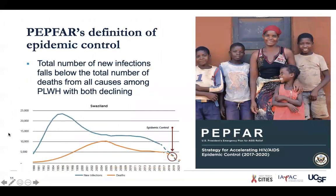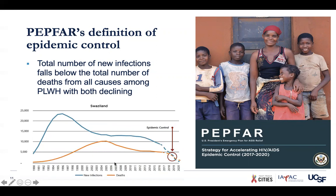PEPFAR has its own definition of epidemic control: it's when the total number of new infections falls below the total number of deaths from all causes among people living with HIV, with both declining. So if new infections are going up and deaths are going up, that's not epidemic control even though the lines may cross. Both need to be declining, and you want fewer new infections than deaths from all causes among people living with HIV.